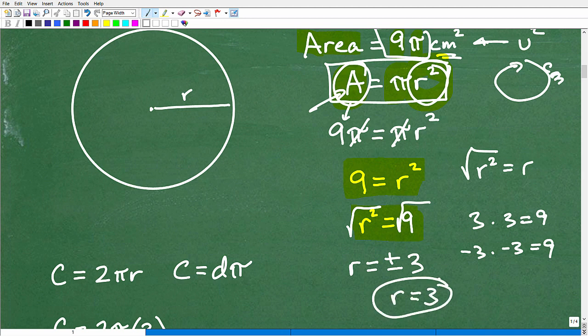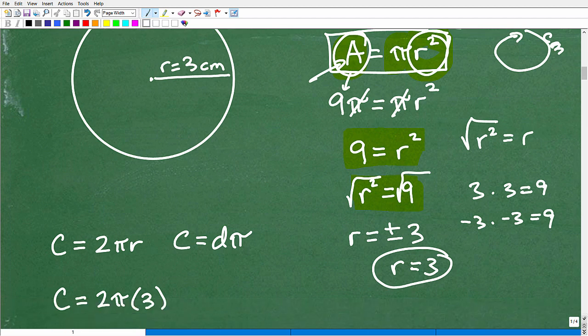Okay, but 3 what? Well, 3 centimeters, okay? So the radius is 3 centimeters because the area was in centimeters squared. Okay, so if you understand that, now we're off to the races because all we need is the radius and we can get the circumference of the circle, alright?